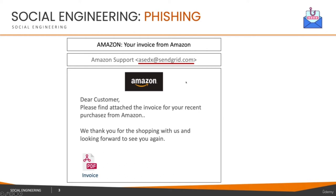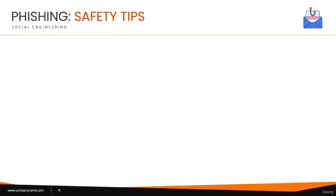If you take a closer look at the email, you'll find grammatical and spelling mistakes — for example, 'purchases' with two full stops, and 'we thank you for the shopping with us.' It's not a rule that every phishing email will have mistakes, but generally they do and it's always good to be on the lookout. Also keep in mind that whatever action you take as part of an organization may have consequences, so it's always important to be careful.